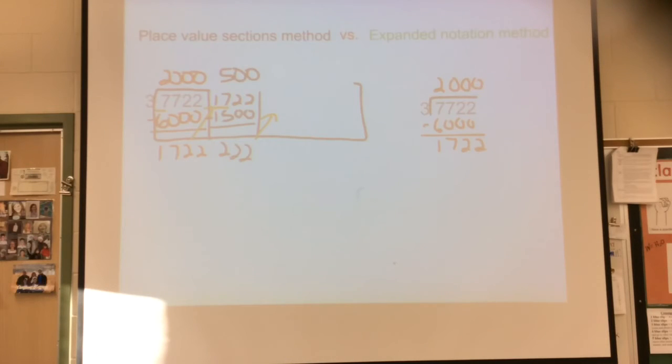And I can do the same thing over here with my expanded notation method. I'm looking at these ones, 1,700. How many hundreds are in there? 500. So I write it up there. 1,500. So far, these are looking exactly the same.